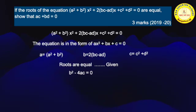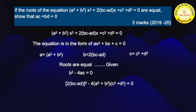b is 2(bc - ad), a is (a² + b²), and c is (c² + d²). I substitute now. This gives b² - 4ac = [2(bc - ad)]² - 4(a² + b²)(c² + d²) = 0.